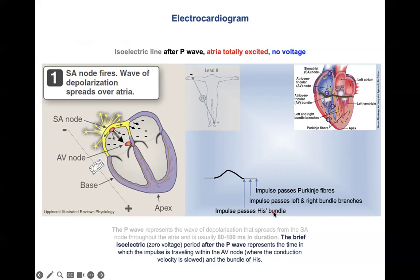The signal travels down the conduction system of the heart: the His bundle, then the left and right bundle branches, and then the Purkinje fibers. These non-contractile cells of the conduction system — like the SA node — produce no signal due to too little mass and too few cells, hence the flat line.